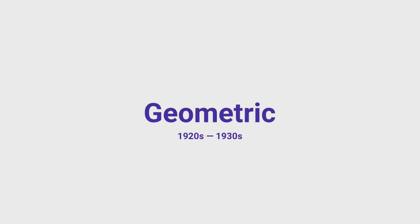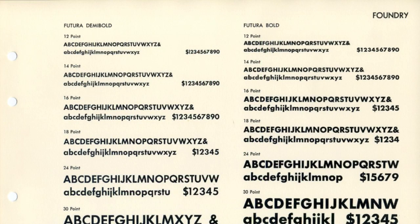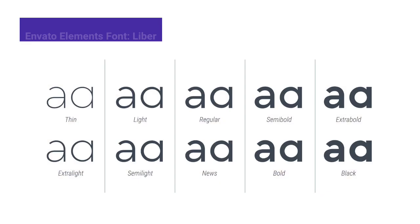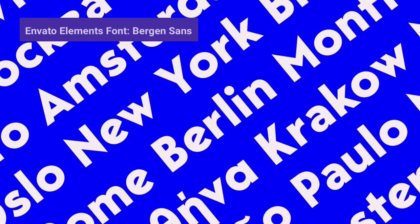Later, in the 1920s and 30s, the Bauhaus School made geometric sans serifs popular as a reaction to the embellished Art Nouveau style. Futura, one of the most popular geometric sans serif styles, was released in 1928.